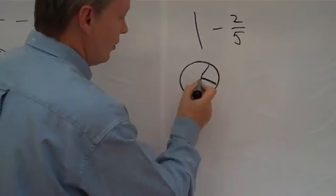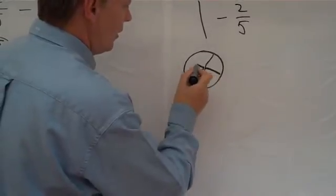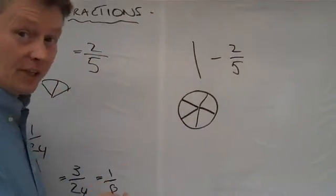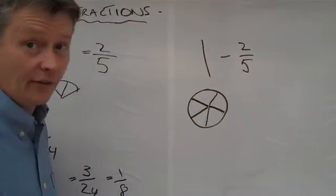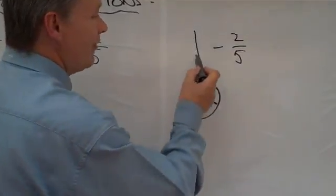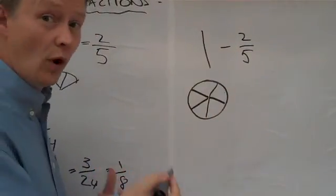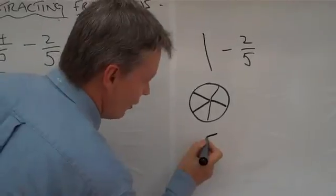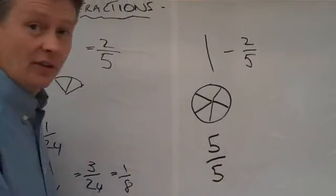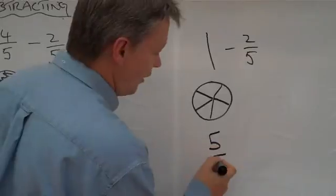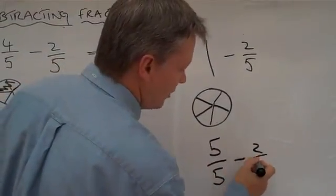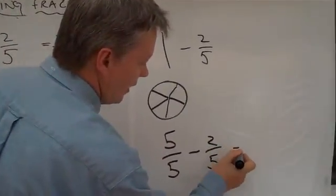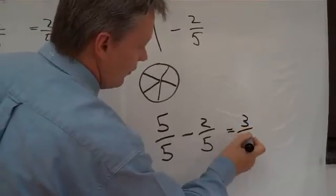one, two, three, four, five. How many bits have you got? You've got five. So, really, if you wanted to, rather than writing one whole one, you could actually write five-fifths. And then you could say five-fifths, take away two-fifths, equals three-fifths.